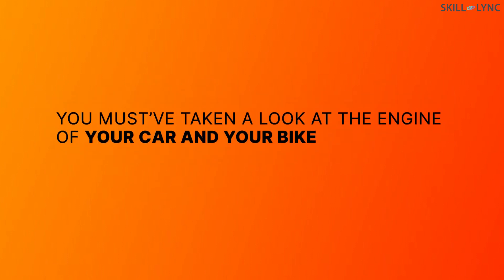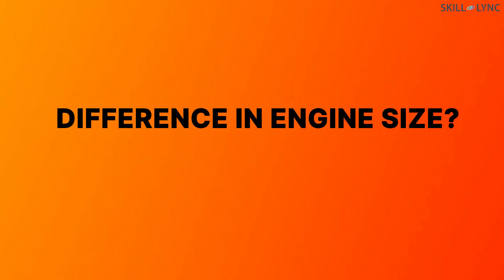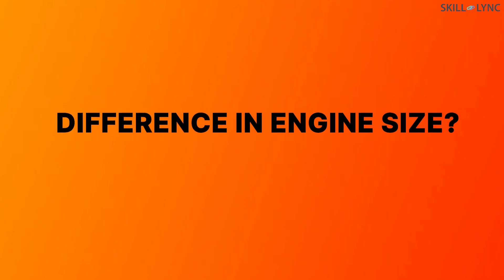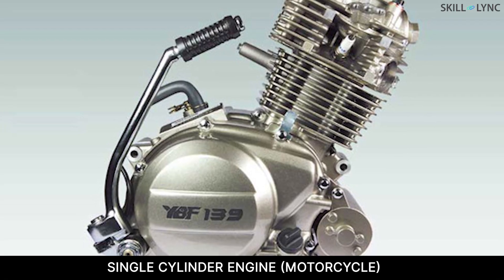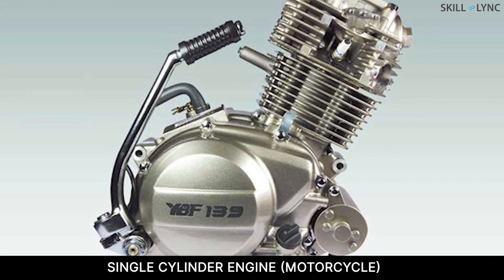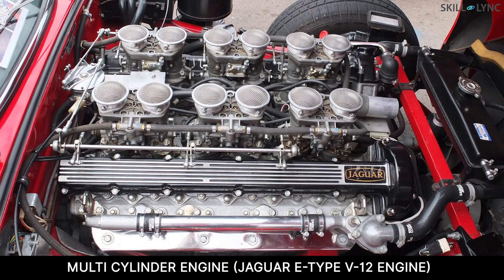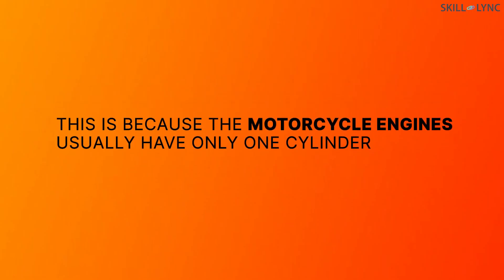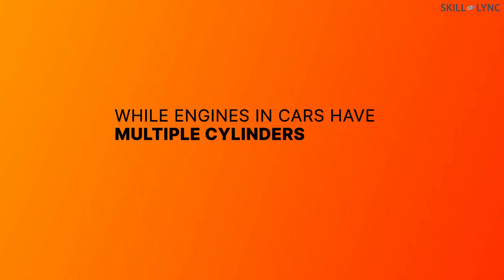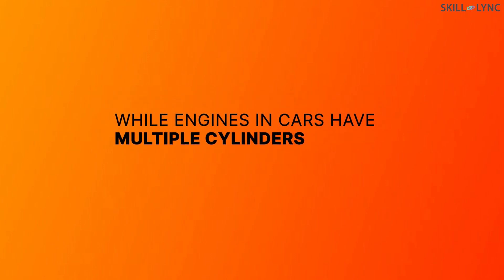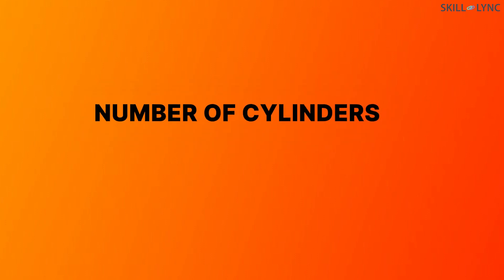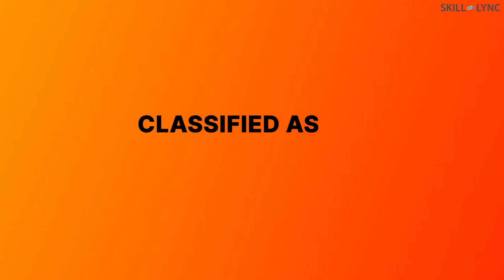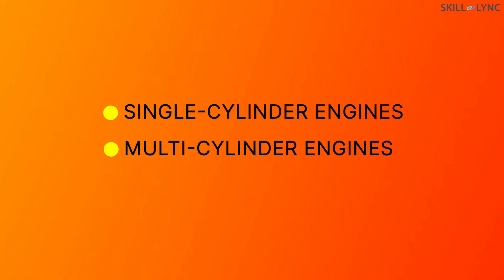You must have taken a look at the engine of your car and your bike. Did you notice any difference in size between their engines? Motorcycle engines are significantly smaller when compared to the engines used in a car. This is because motorcycle engines usually have only one cylinder, while engines in cars have multiple cylinders. Based on the number of cylinders, IC engines are classified as single-cylinder engines and multi-cylinder engines.